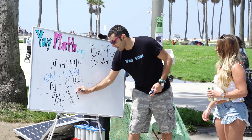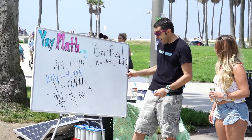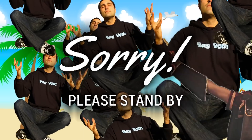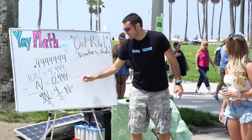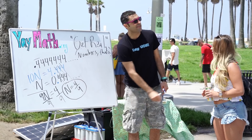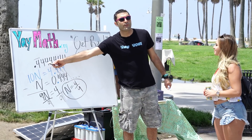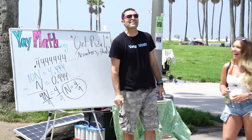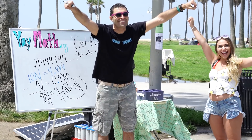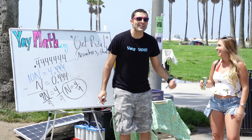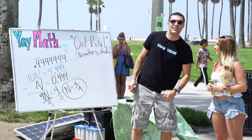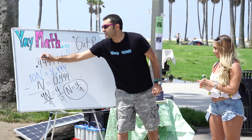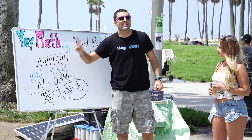So the fraction version of 0.4444 repeating is 4 over 9 — that's the final answer. Now here's a shortcut trick: the fraction version is 4 over 9. How many digits are being repeated? Just one — the digit 4 repeating. Whatever number is being repeated, you simply put it over nine.